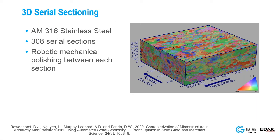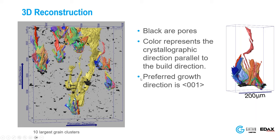An exciting area is 3D EBSD via serial sectioning. This is work from Dave Rowenhorst's group on AM316 stainless steel with 308 sections. Dave used a robot to mechanically polish between each section to remove a little material, puts it back in the microscope, does an EBSD scan, and repeats the process. You can then reconstruct the 3D data and see really long elongated grains — somewhat surprising when you go to 3D data and realize you don't capture those grain shapes from individual sections. This image shows the 10 largest grain clusters.